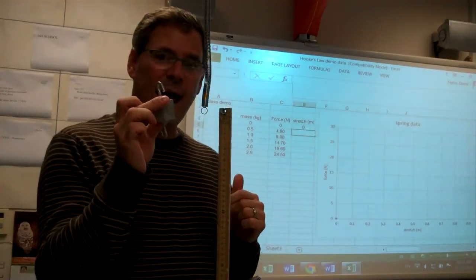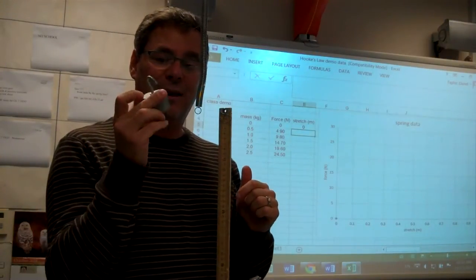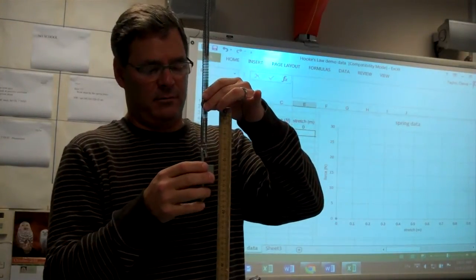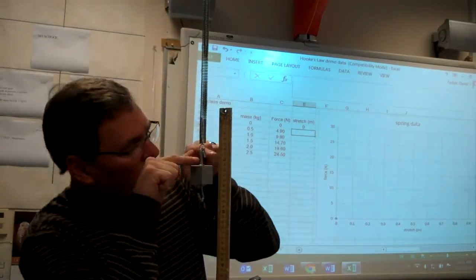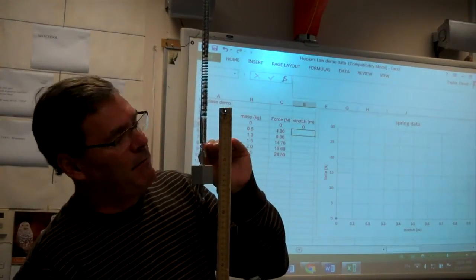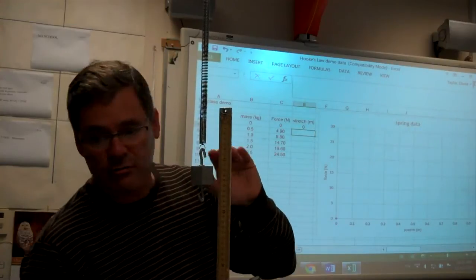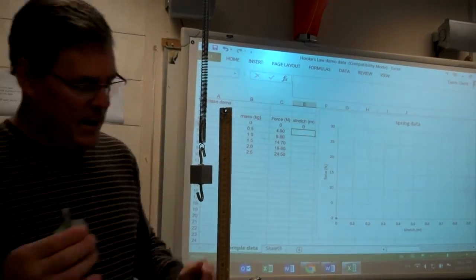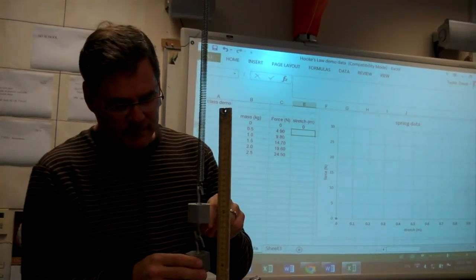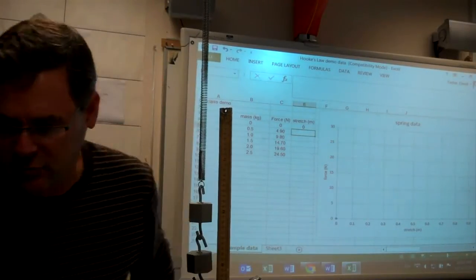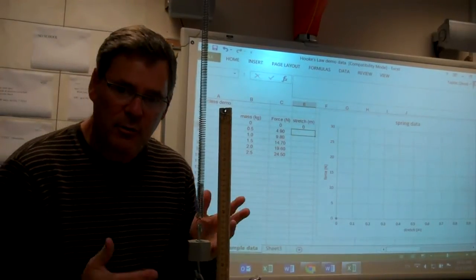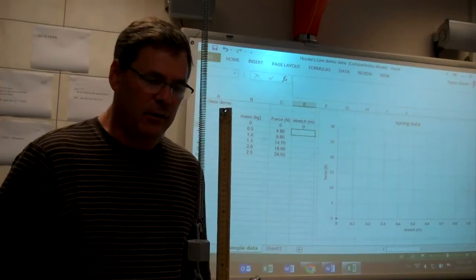And I'm going to add 500 grams of mass at a time. So I'll add 500 grams and I'll see, I'll put my eye level right here and see how far the spring has stretched. And then I'll continue to add 500 grams at a time, and I'll keep doing that up to about 2500 grams.